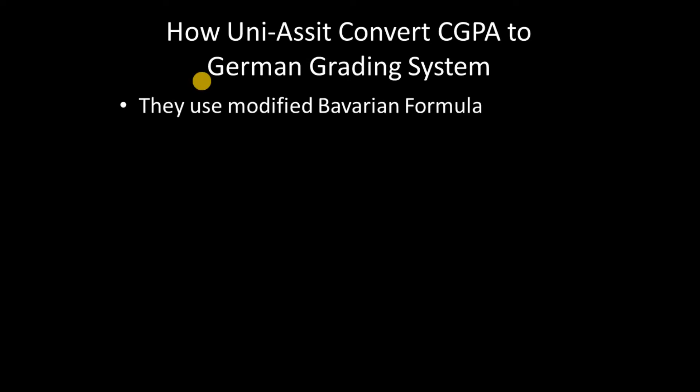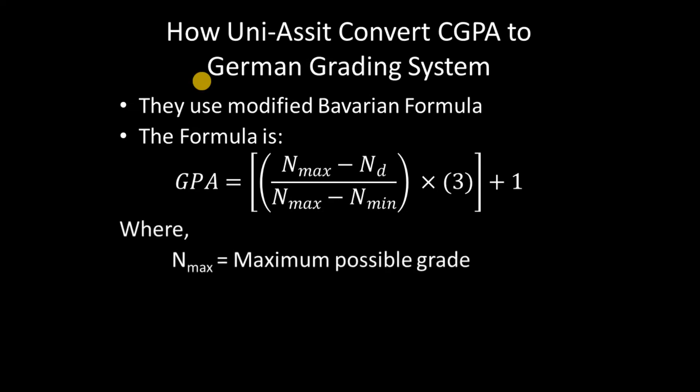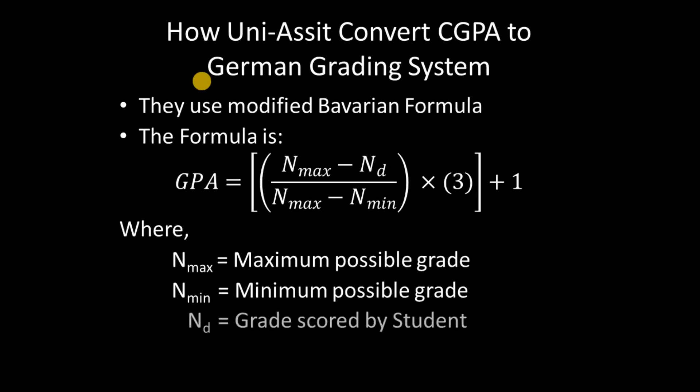So how does uni-assist convert CGPA to the German grading system? As mentioned, they use the modified Bavarian formula. The formula is: German GPA = ((N_max − N_D) / (N_max − N_min)) × 3 + 1. Here, N_max is the maximum possible grade in your university, N_min is the minimum possible passing grade, and N_D is the grade scored by the student in their degree or program.